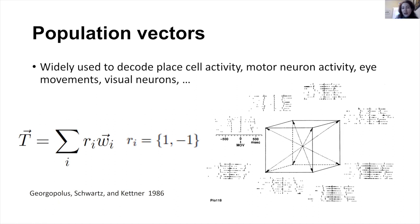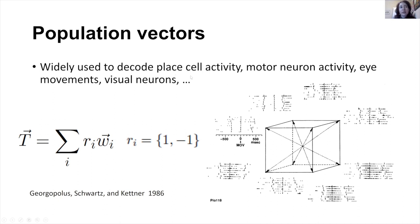It's a very attractive approach because it's simple. For each neuron, we characterize its selectivity by its preferred direction, and the population vector is that preferred direction times the number of spikes the neuron produced. This method is also used in brain-machine interfaces, eye movements, and in the hippocampus to read out the position of the animal based on place cell activity — where W is the place field, added according to the number of spikes of each neuron. It's a very simple and efficient way, and for the most part it works well.